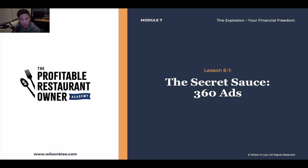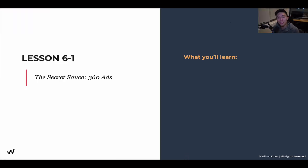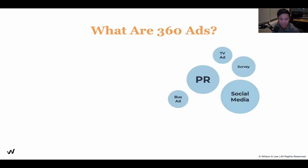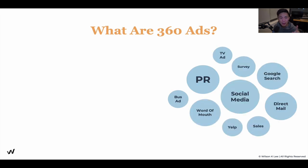Hello, welcome back to module seven, lesson number 6.1 - the secret sauce: 360 ads. In this lesson, you're going to be learning why you should be running 360 ads for your restaurant. Now's the time to do so. A lot of people jump into this right away, but only come to this when you have your foundation set, when you have your alignment and connection done. Then we come into this module - what is truly going to get you some financial freedom.